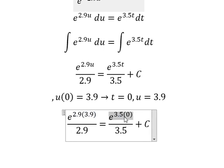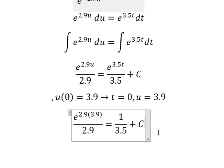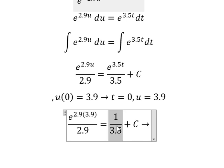So from this we have 1 over 3.5. I will move this term to the left to isolate C.